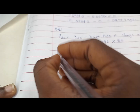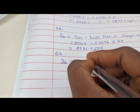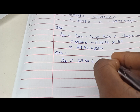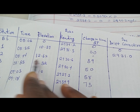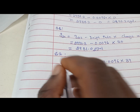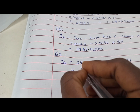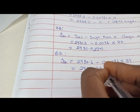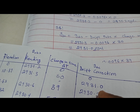For station two, GDC equals 2930.6 minus 0.0096 times 39. The change in time for that station is 39 minutes. Taking the calculator: 2930.6 minus (0.0096 times 39) gives us 2930.2 milligals.